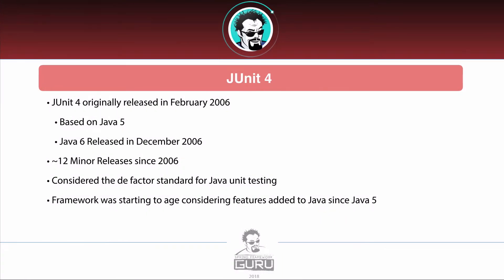JUnit 4 was originally released back in February 2006, and importantly, it was based on Java 5 — Java 6 was actually released after that. They've made about 12 minor releases since 2006, and it's become the de facto standard for Java unit testing — an absolute workhorse. But a lot of language features have been added to Java since then. Java 8 was a huge release for the Java community, and JUnit 4 was not able to support that.